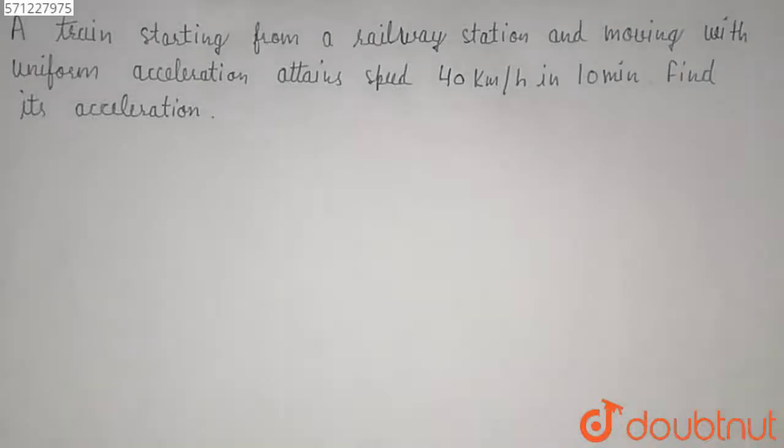Hello. In this question, we have given that a train starting from a railway station and moving with uniform acceleration attains a speed of 40 km per hour in 10 minutes. So we have to find its acceleration.